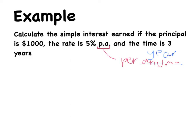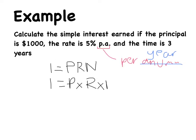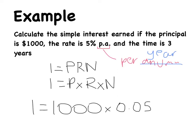Here I need to calculate the simple interest, so I write down my formula: I equals PRN. There are no operators written between P, R and N, which means the formula is saying: simple interest equals P multiplied by R multiplied by N. A thousand dollars multiplied by 5% multiplied by three years. My P is 1,000. My rate is 5%, and I'm going to handle that as a decimal: 0.05. And my number of time periods is 3 years.